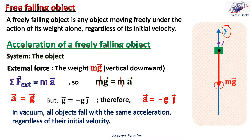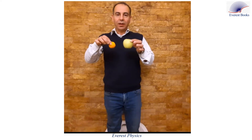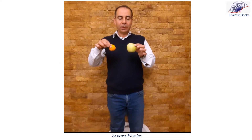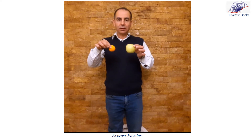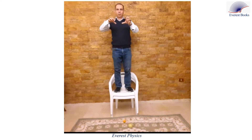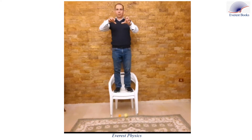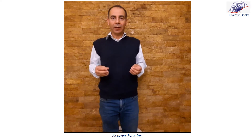In general, in vacuum, all objects fall with the same acceleration regardless of their initial velocity, and this acceleration equals the gravitational acceleration g. The two objects are dropped simultaneously. The mass of the apple is three times that of the orange. Which one reaches the ground first? In this experiment, we neglect air resistance. We observe that the two objects reach the ground at the same time, since they have the same acceleration, which is equal to the gravitational acceleration.